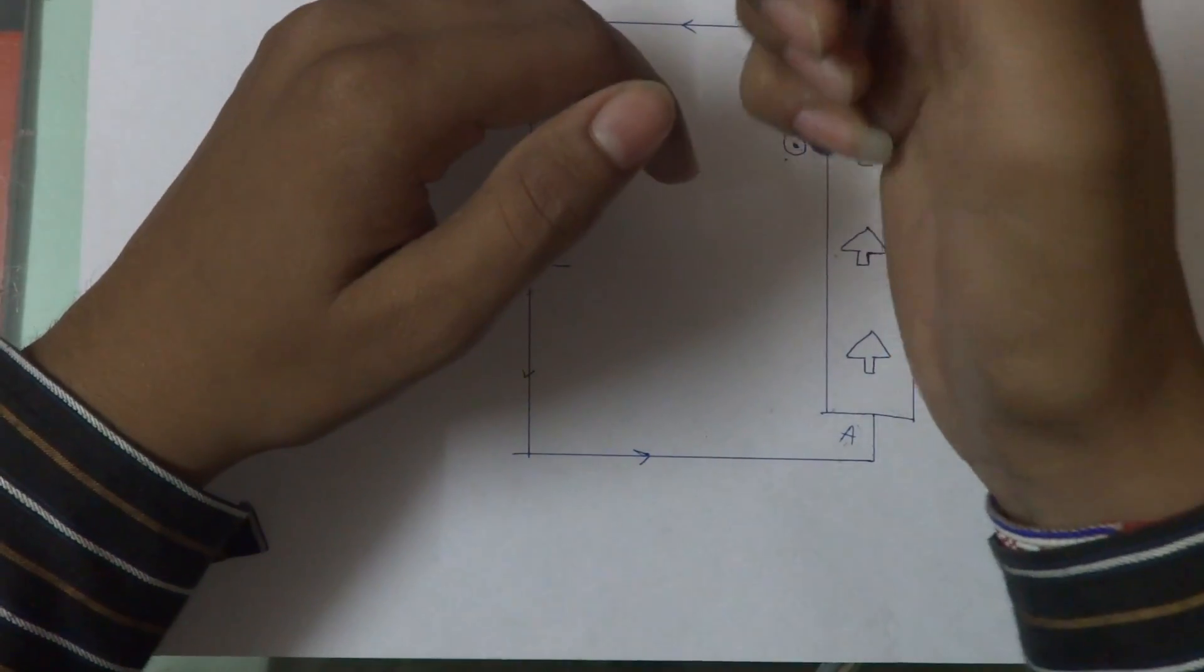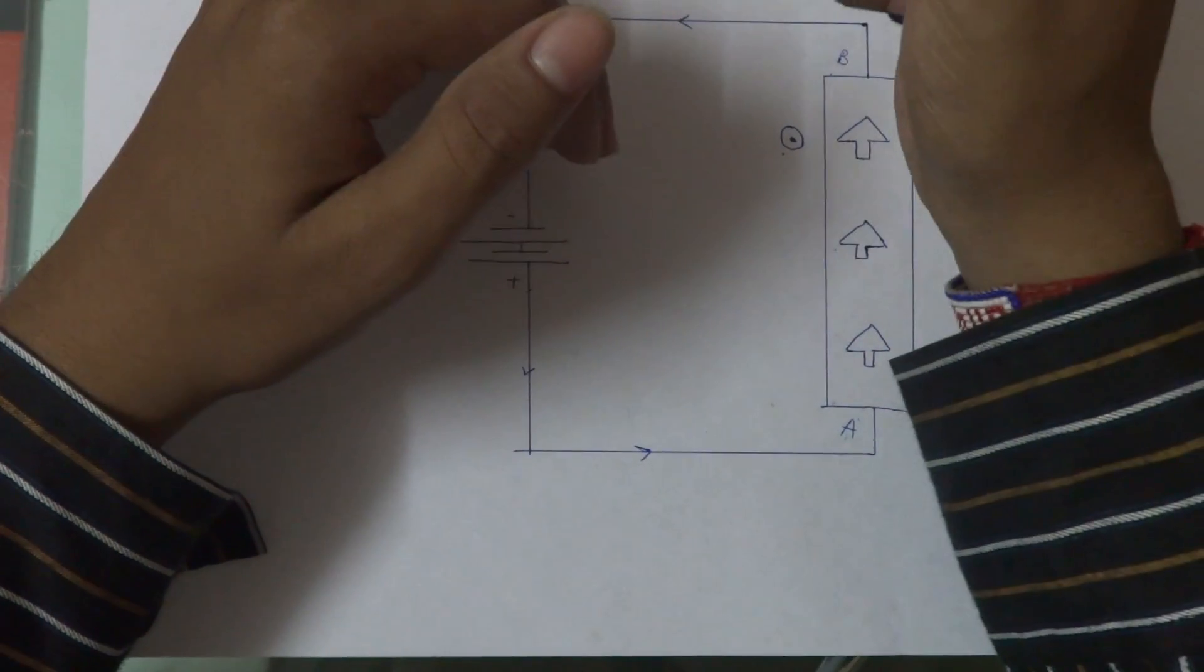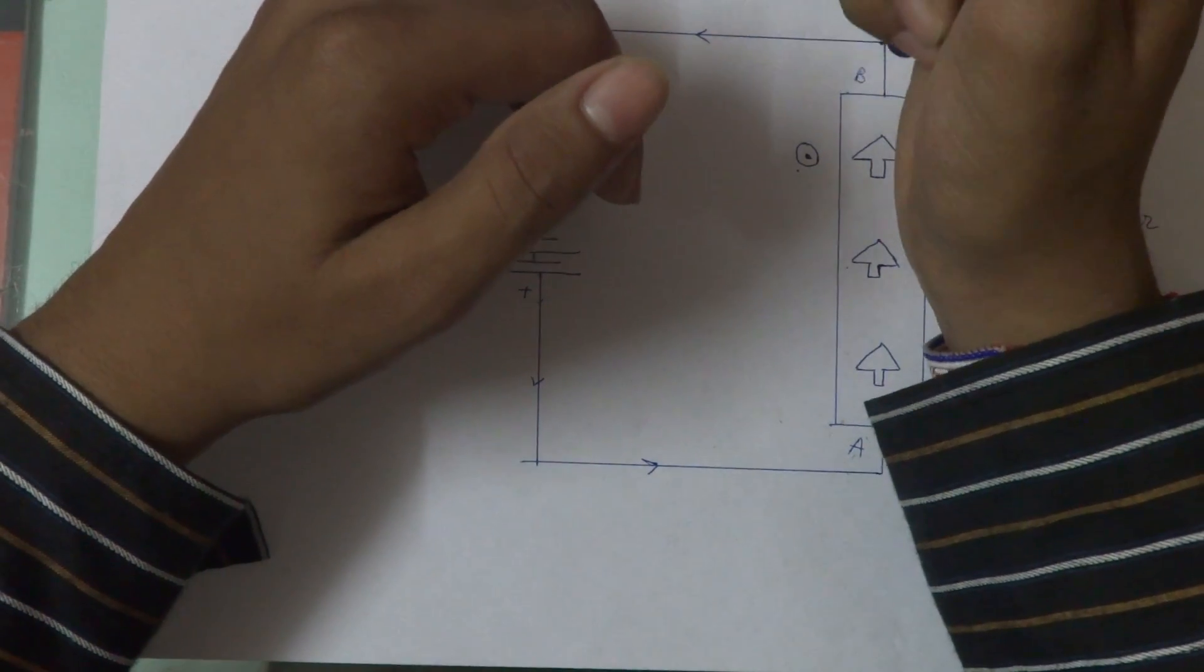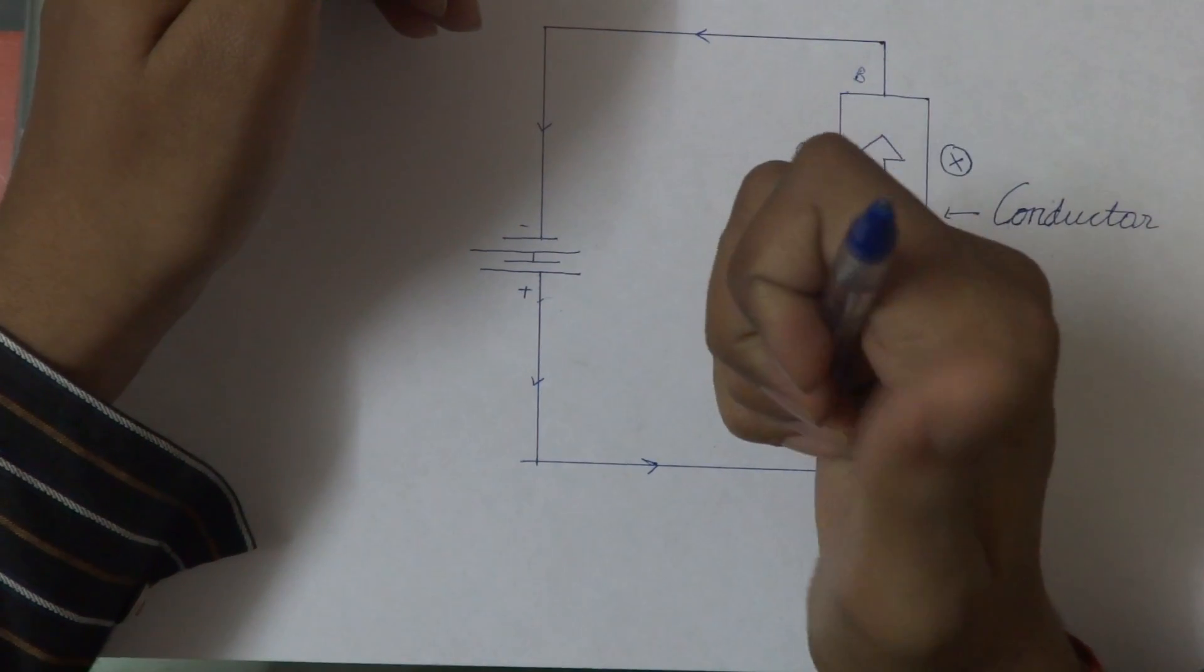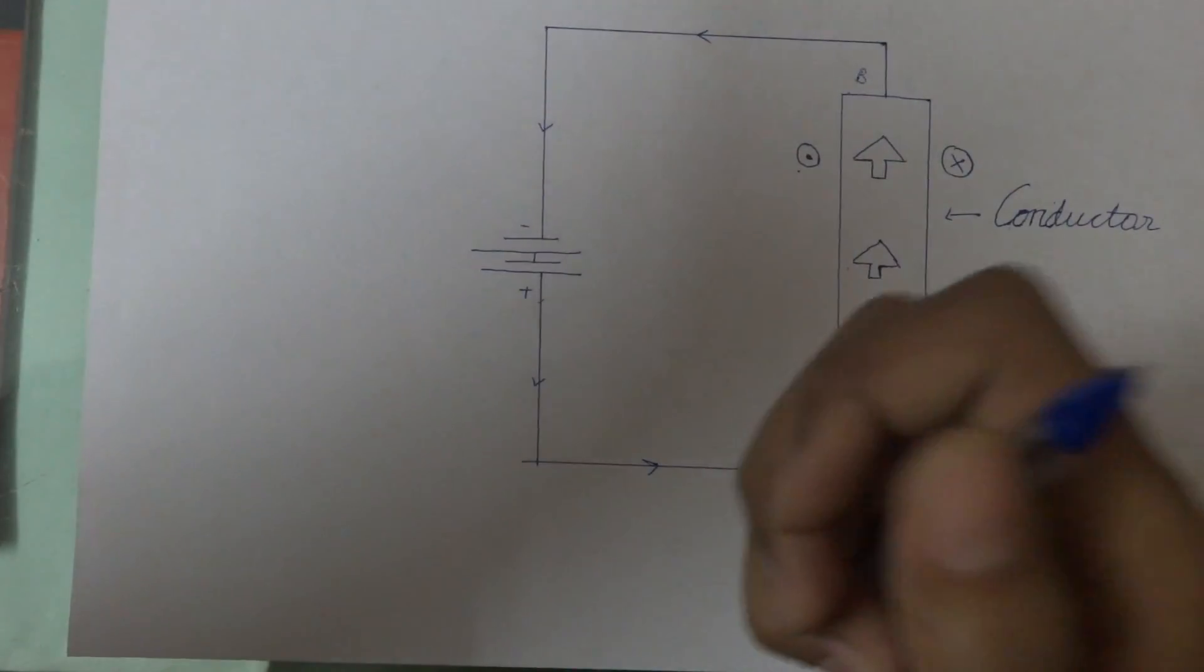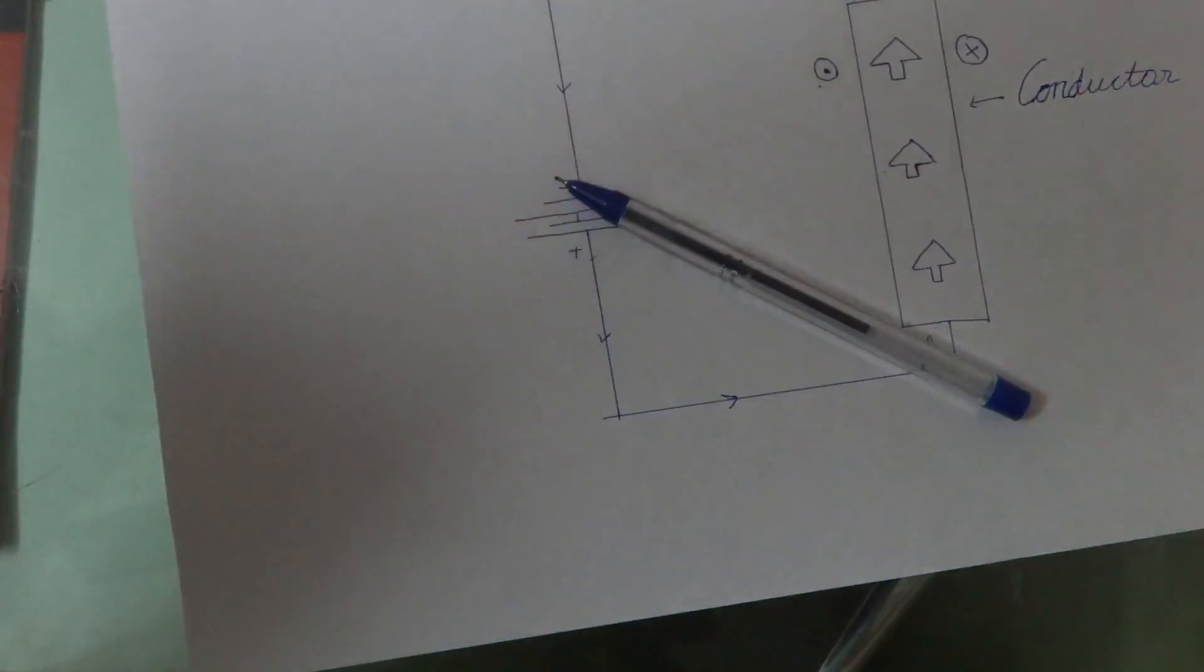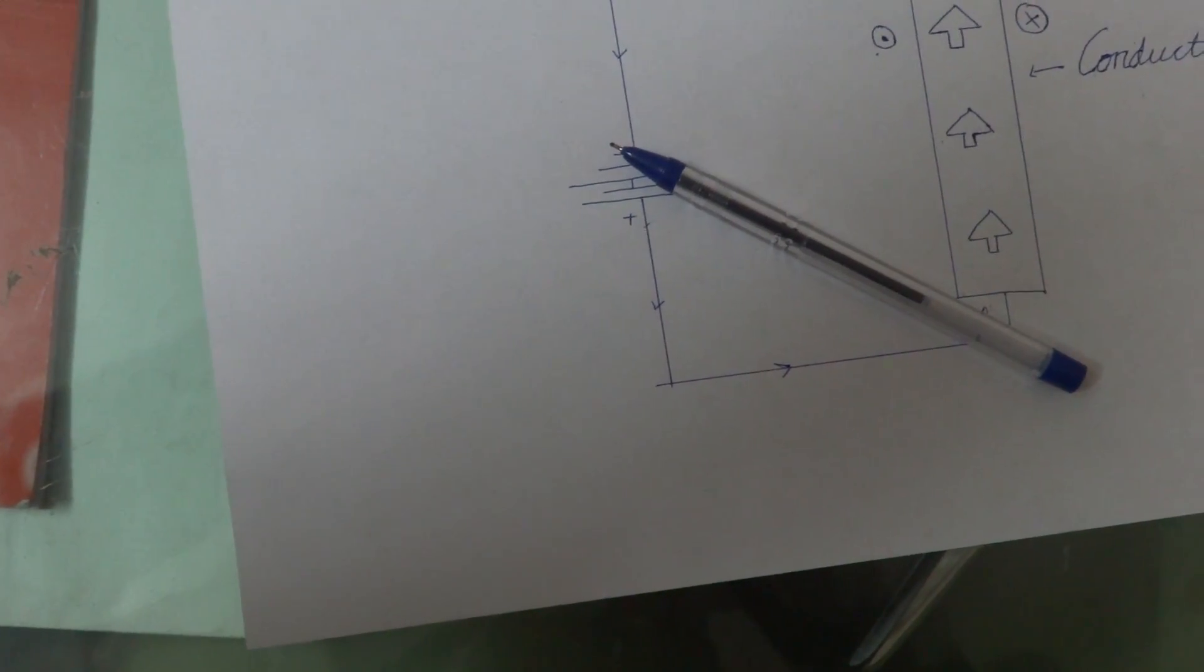Now if this is a conductor applying right-hand thumb rule over here, the magnetic field is this and this is the direction of the current. So that simple it is. Thanks, subscribe and like and comment.